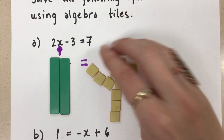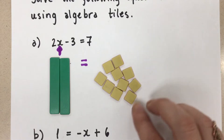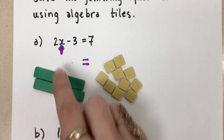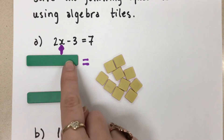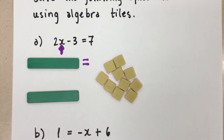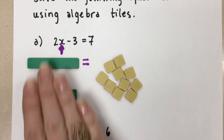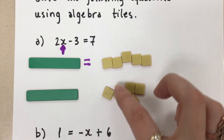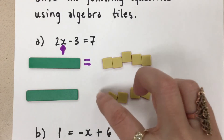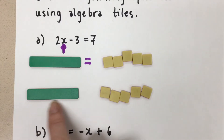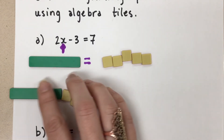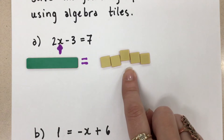Now I'm left with 2x equals 10. So I still don't have what x equals. I have 2 x's, so let's break them up into two groups — one group with 1x and another group with 1x. But we want to keep things equal, so if I divide this into two groups I also divide this side into two groups. They were 10, so I can do 5 and 5. Now you can see that 1x equals 5, so our solution is x equals positive 5.